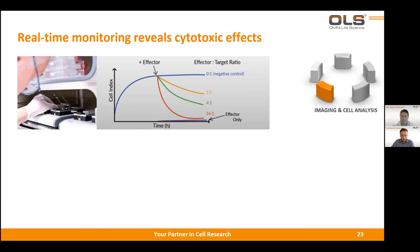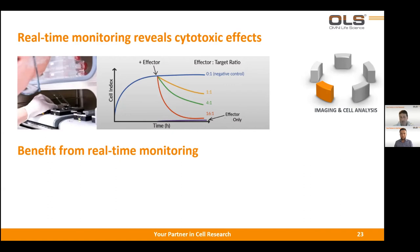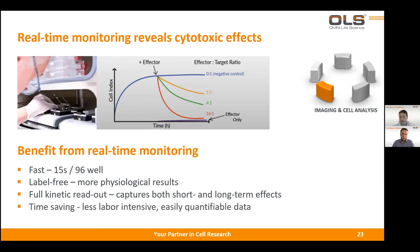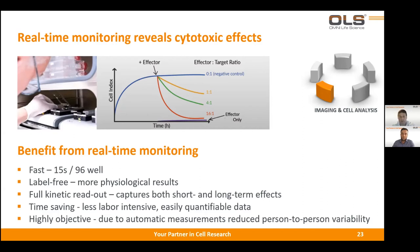Can you only measure cytotoxicity mediated by substances, or also other kinds of cytotoxicity? It's possible to also measure cytotoxicity mediated by other cells — for example, natural killer cells or antibody-dependent cytotoxicity. The benefits of real-time monitoring include: it's very fast — measuring a 96-well plate within 15 seconds; it's label-free, giving more physiological results; you get a full kinetic readout capturing both short and long-term effects; it's time-saving, less labor-intensive, and gives easily quantifiable data. Finally, it's highly objective because automatic measurements reduce person-to-person variability.